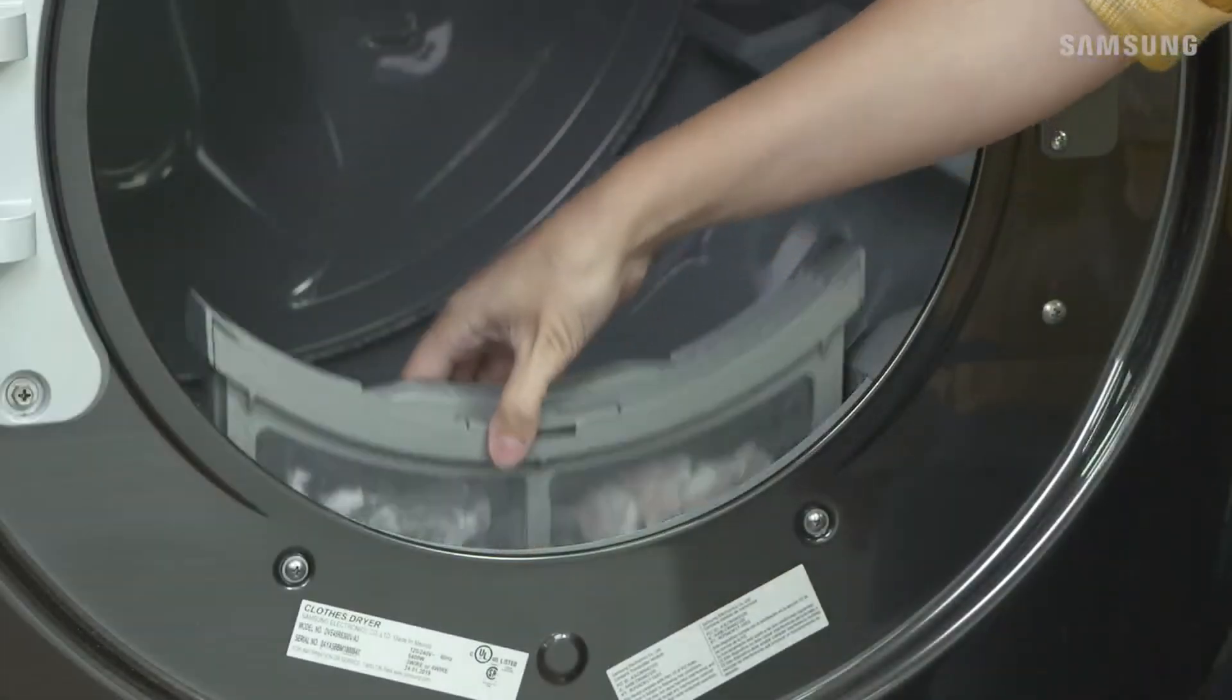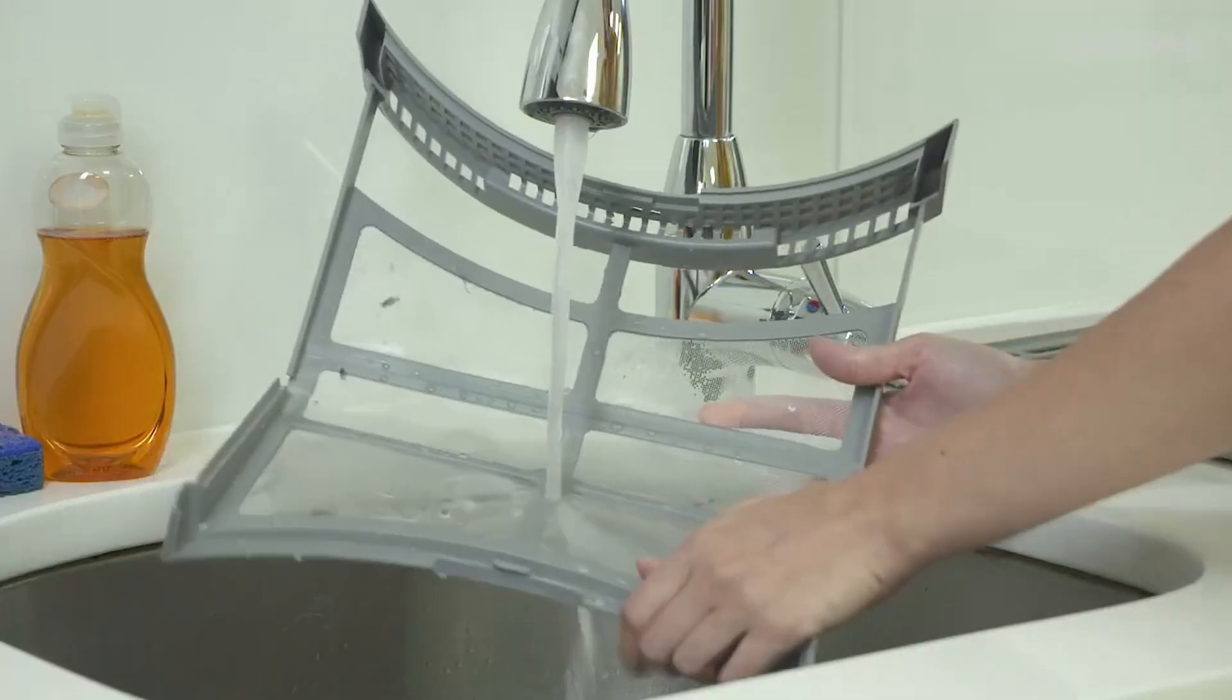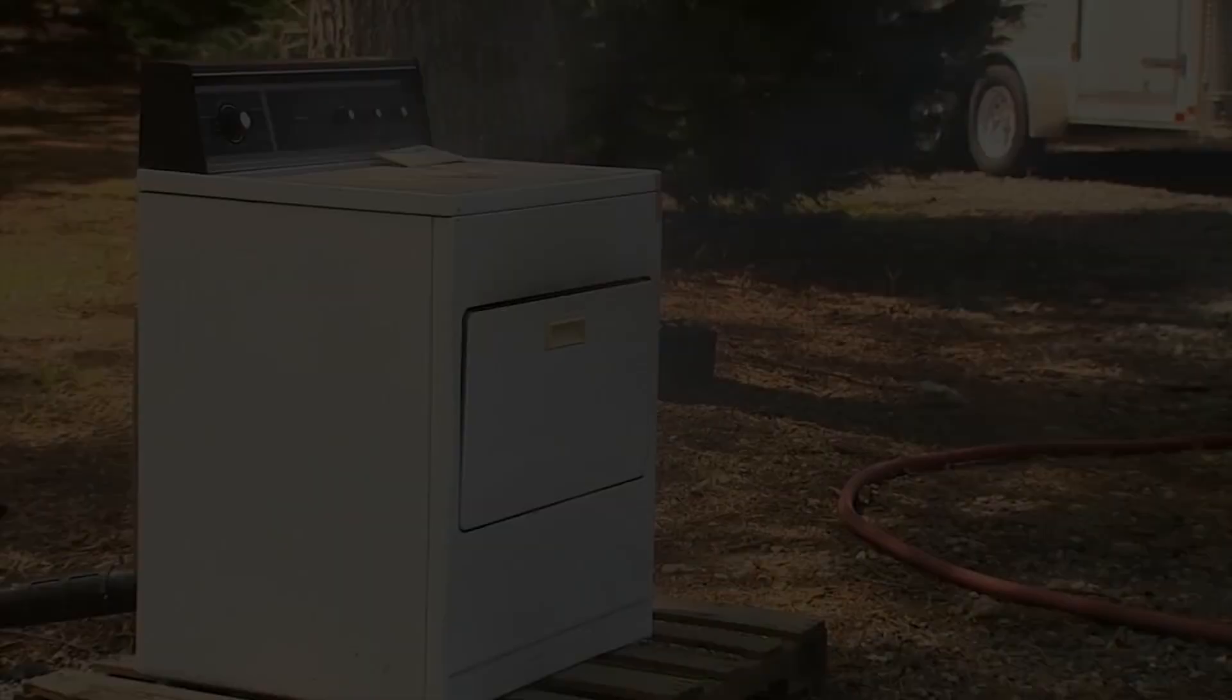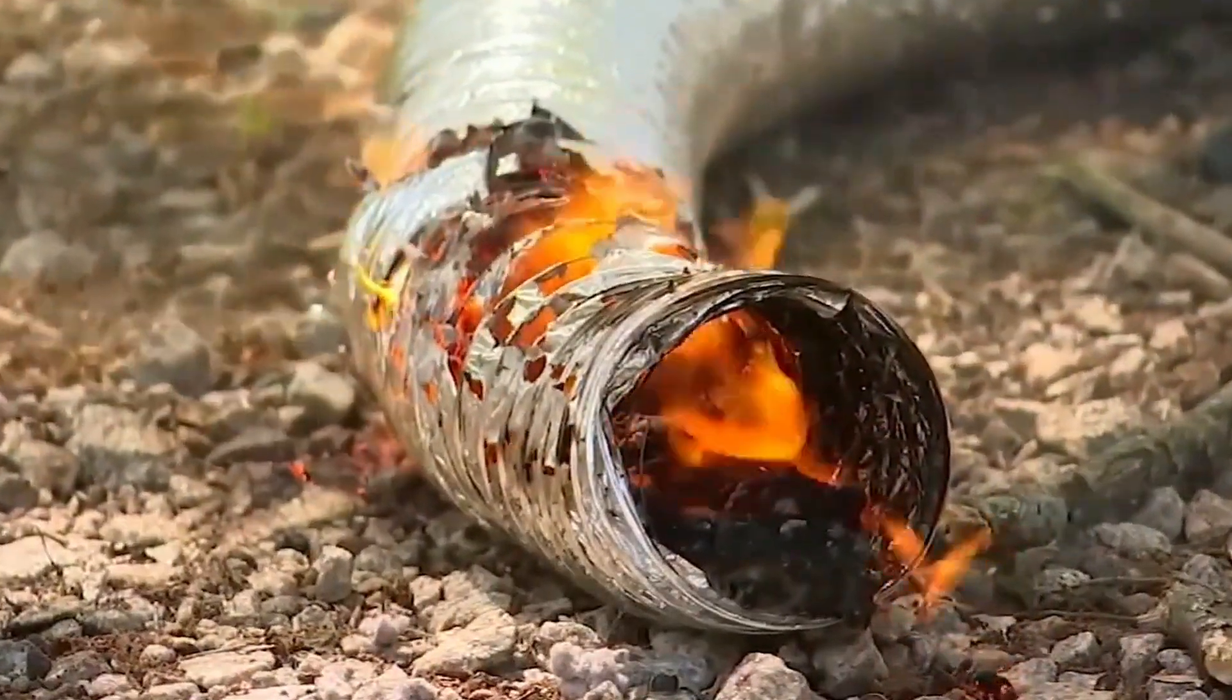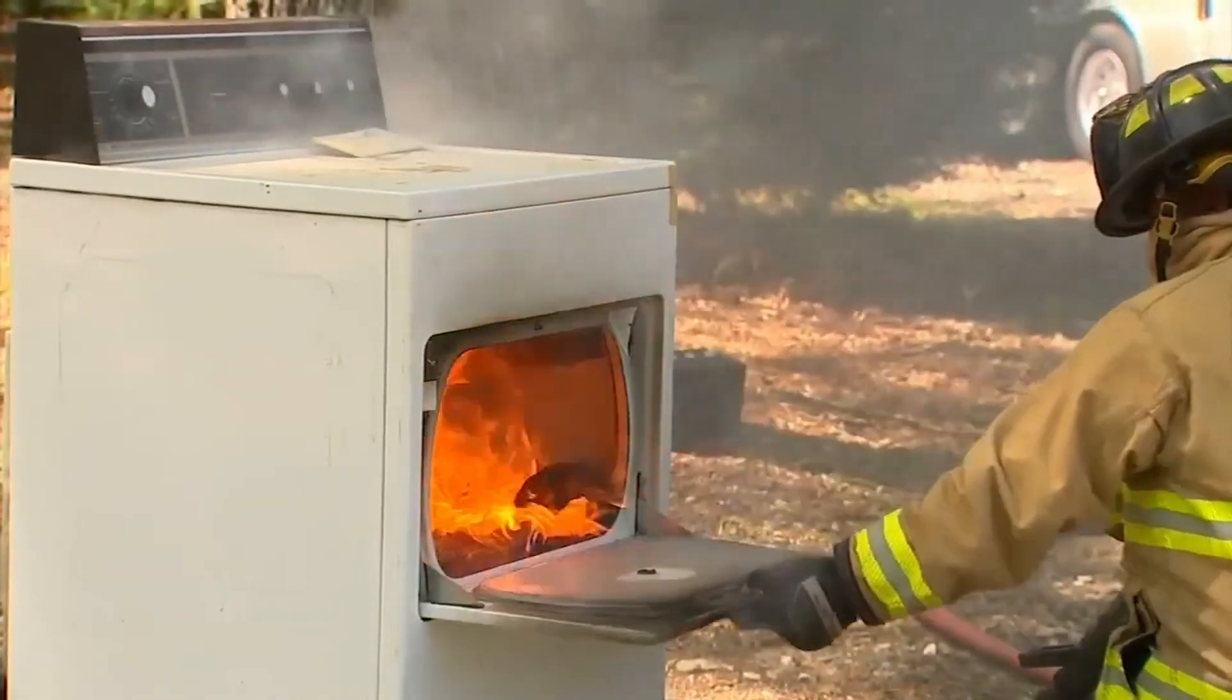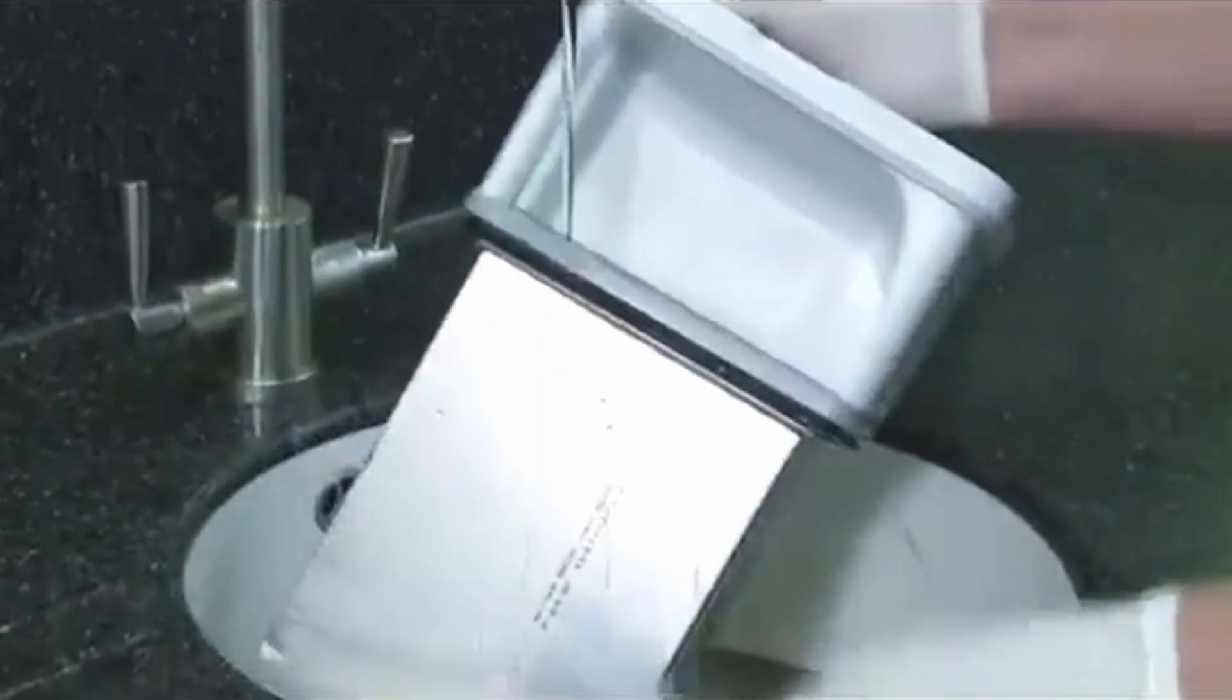In ventless dryers the damp air passes over a filter. This catches most of the lint. These filters need to be cleaned regularly. This is a very important step as these pieces of lint are highly flammable so if they're allowed to build up inside the dryer they can easily catch fire. In fact dryers are involved in around 14,000 house fires each year in the US alone. So please make sure that you clean those vents and filters.